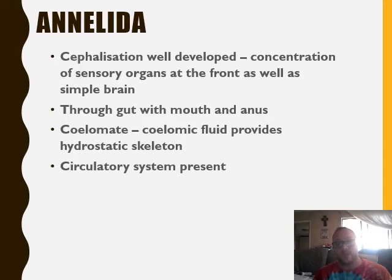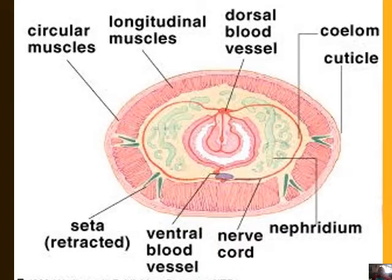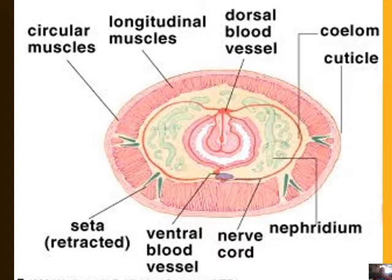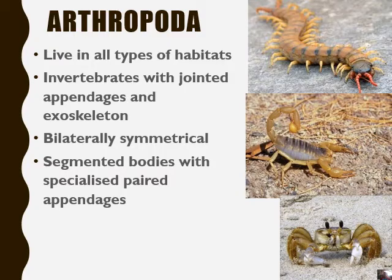Cephalization is extremely well-developed in Annelids — there is a concentration of sensory organs at the front and a very simple brain. They have a through gut with a mouth and anus. They are coelomate, and the coelom provides a hydrostatic skeleton. They still need to be kept damp on the outside. A circulatory system is completely present. In the cross-section you can see longitudinal muscles, circular muscles, a dorsal blood vessel, a coelom, a cuticle made of chitin, a nerve cord, a ventral blood vessel, and setae — structures that allow the earthworm to grip while moving.